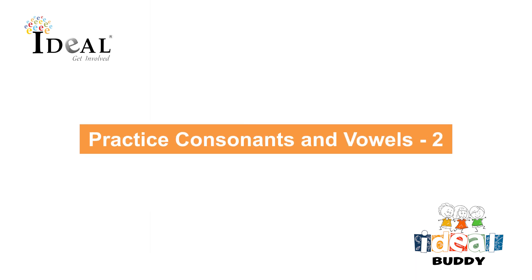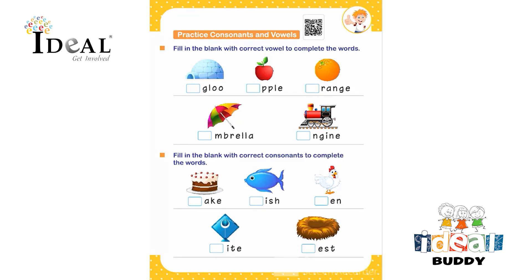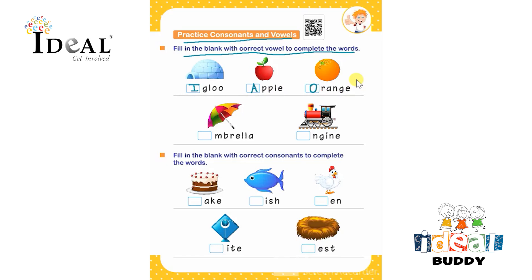The child has to fill in the blanks with correct vowels to complete the words. First picture is of an igloo — they recall the vowels and write the correct vowel. Another one is an apple — they write A and read out the spelling: A, double P, L, E. After that, orange: O, R, A, N, G, E. After that, umbrella — U will be the vowel: U, M, B, R, E, double L, A.